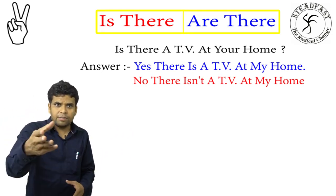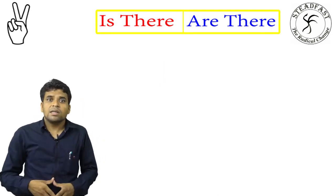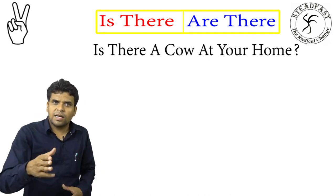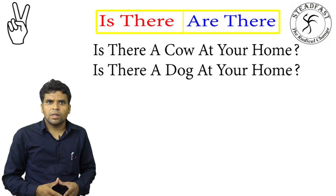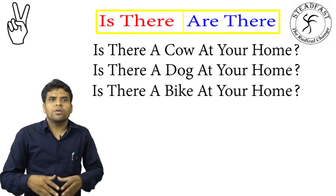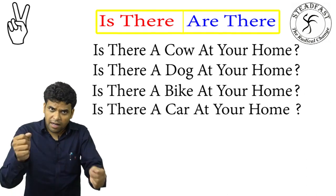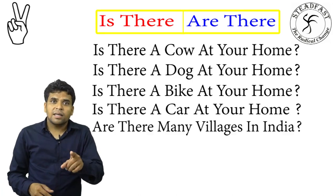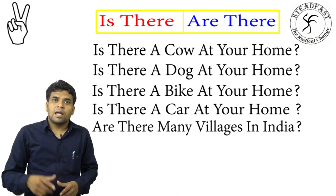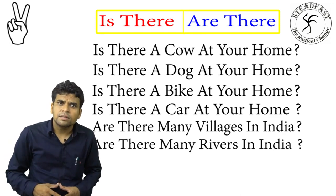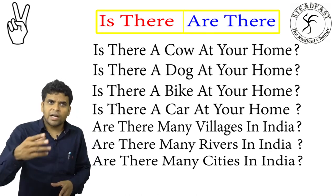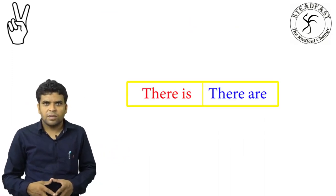I'll ask you more questions: Is there a cow at your home? Is there a dog at your home? Is there a bike at your home? Is there a car at your home? About India: are there many villages in India? Are there many rivers in India? Are there many cities in India? Answer me yes or no. This was the use of 'there is' and 'there are'.